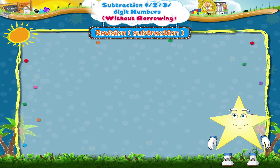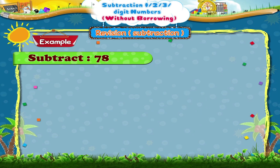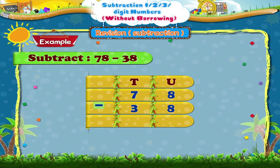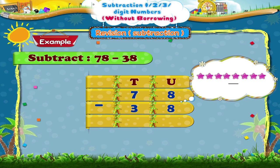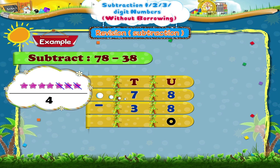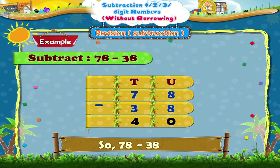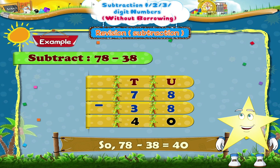Good! Let us try another example. 78 minus 38. So 8 minus 8 equals 0. 7 minus 3 equals 4. So the answer is 40. Very good, Starry!